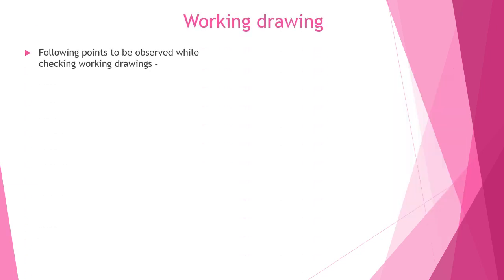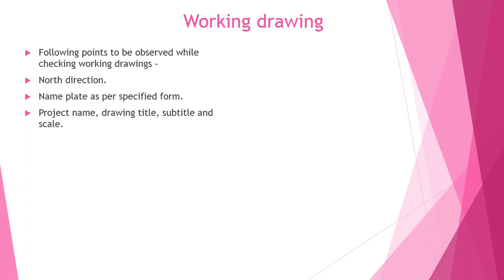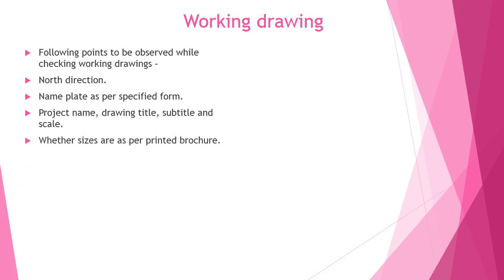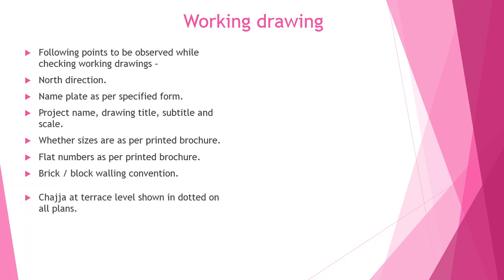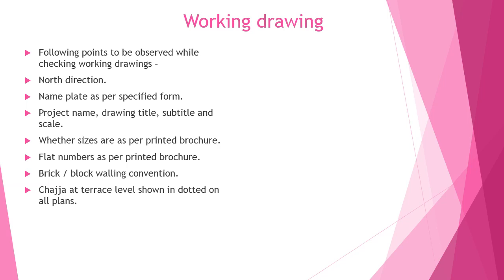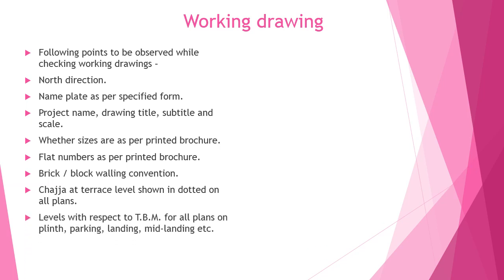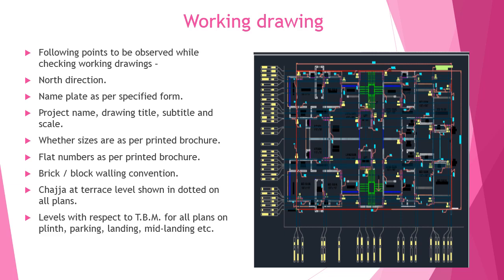Working drawings: the following points have to be observed while checking the working drawings — north direction, name plate as per specified format, project name and title, size as per printed brochures, flat numbers as per the sales brochure, brick or block work convention, chajja at terrace level should be shown in dotted lines, and levels with respect to temporary benchmarks for all plans of plinth, parking, etc.